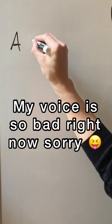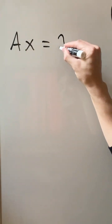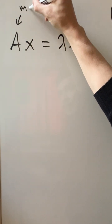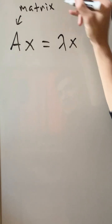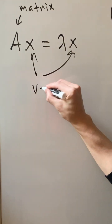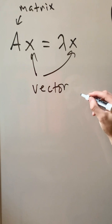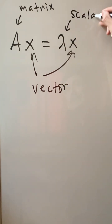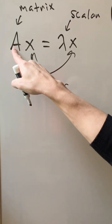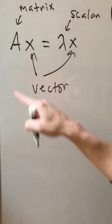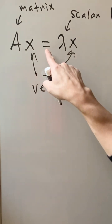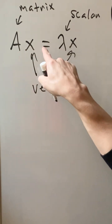Consider this equation: A times x equals lambda times x, where A is what we call a matrix, x is what we call a vector, and lambda is what we call a scalar. What must happen is, if you go this matrix times this vector, and this scalar times this vector, you get the same thing on both sides of the equal sign.